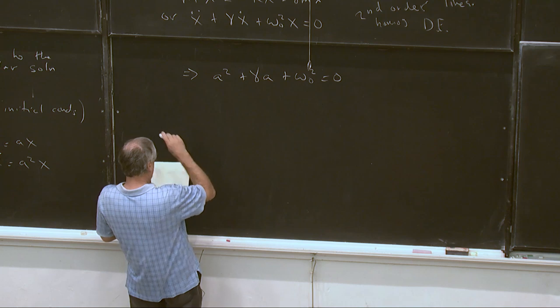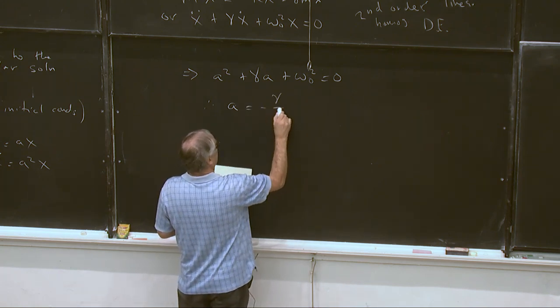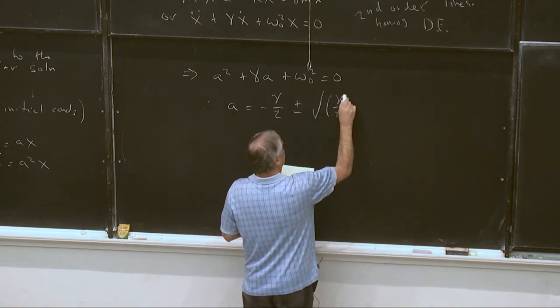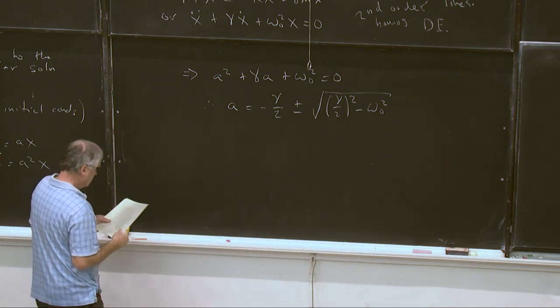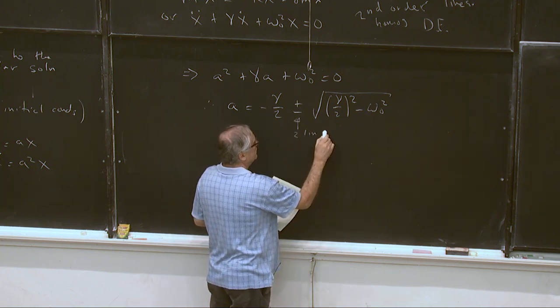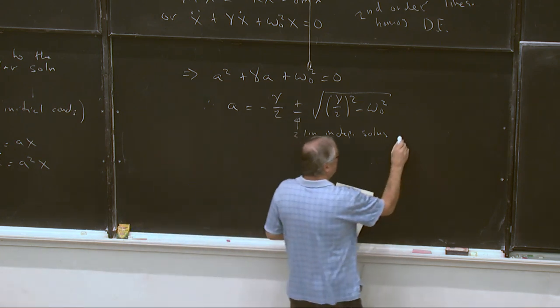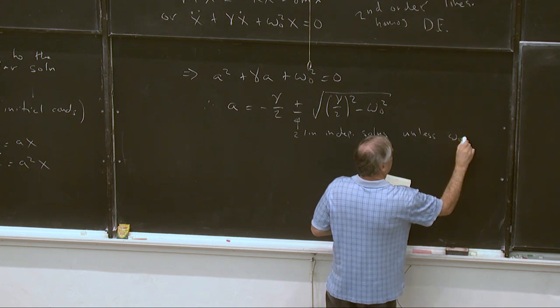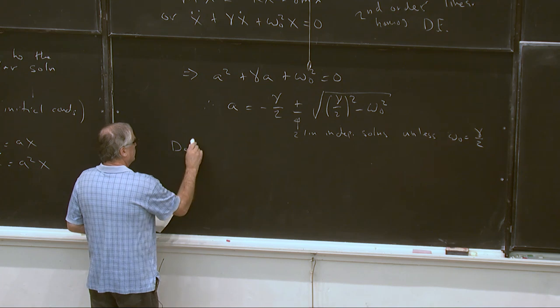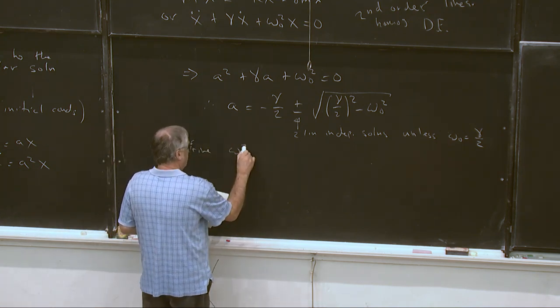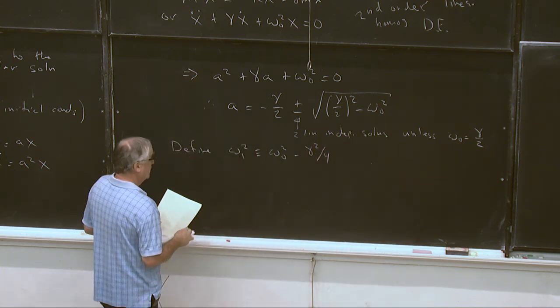We can divide out the x and we get A squared plus gamma A plus omega dot squared is equal to zero. So, okay, that's just a quadratic equation in A. So that means that A is equal to minus gamma over two plus or minus the square root of gamma over two squared minus omega naught squared. I've already divided by the two here. And so this is my two linearly independent solutions, unless omega naught is equal to gamma over two. In which case that's zero and something's going on there that I have to worry about.